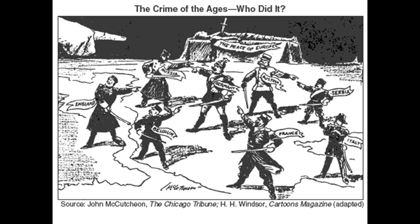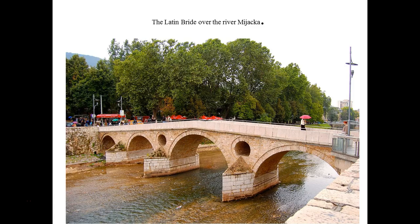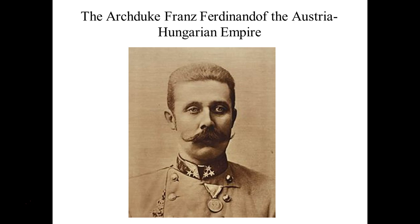What's going to happen in a city called Sarajevo on June 28th, 1914 is going to change the world. It's going to lead to a lot of finger pointing and the alliances breaking out. It all begins in the Balkan Mountains. There was a bridge over the Mijaka River — this is the city of Sarajevo. The city of Sarajevo has been a contested city.